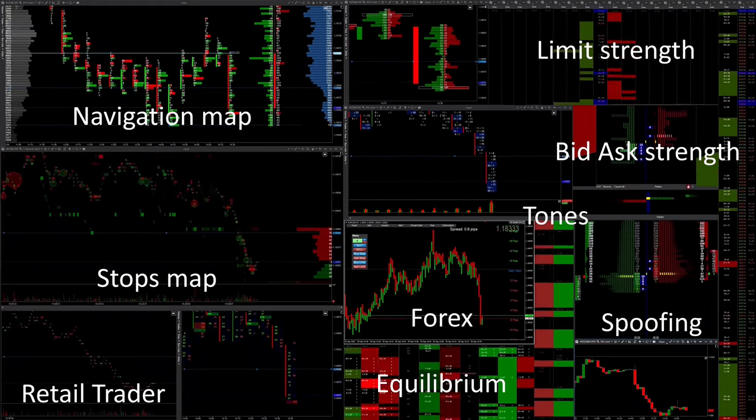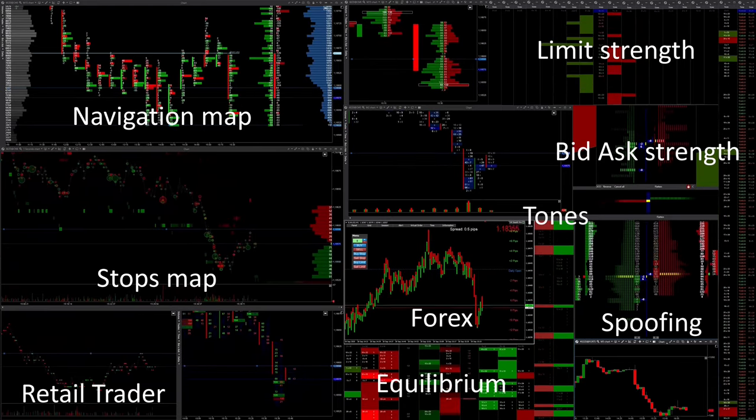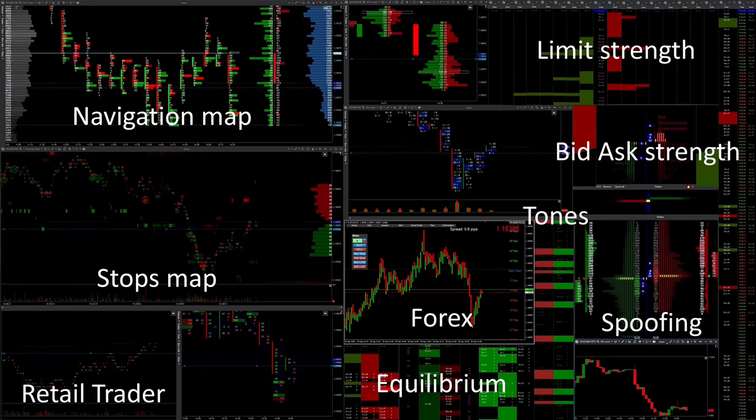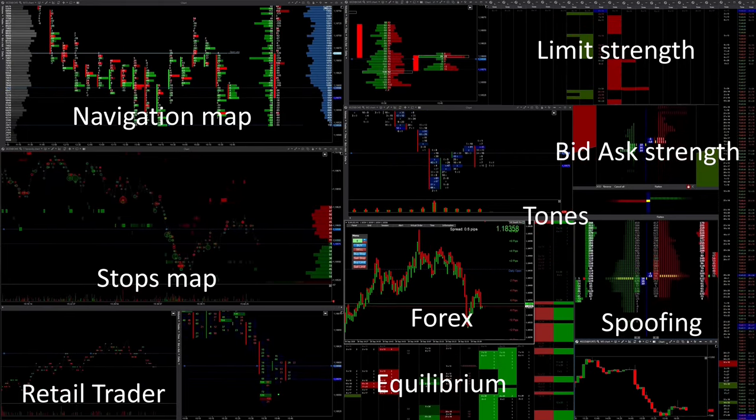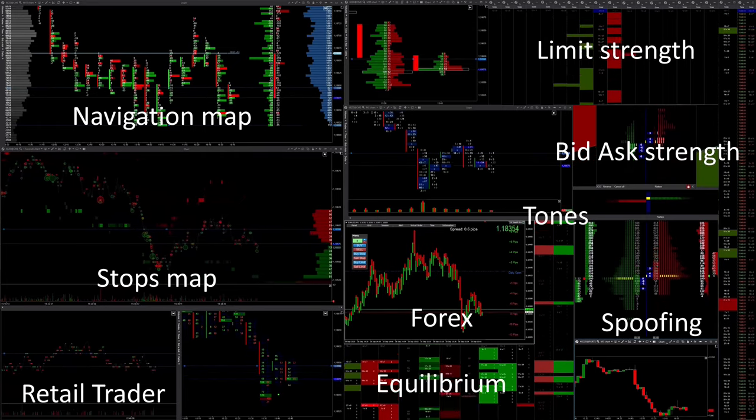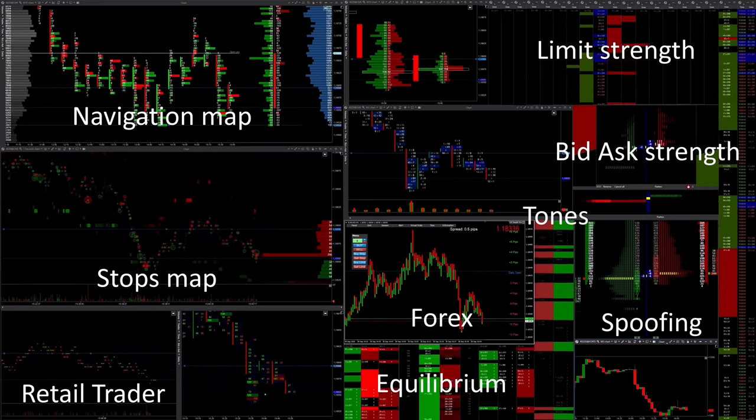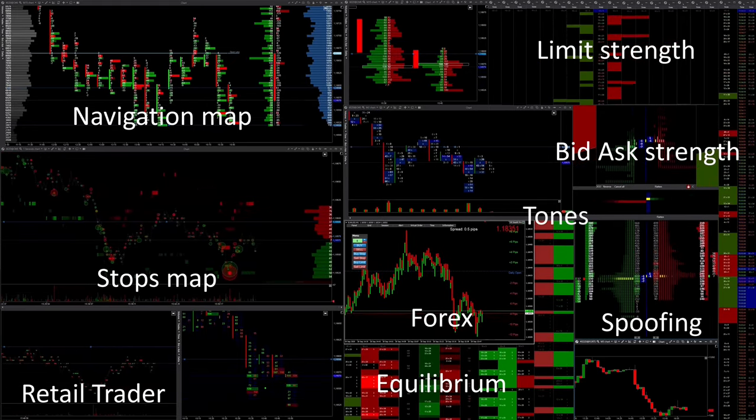In addition, my tones give me information that is not yet shown on the screen. In the middle you can see my trading screen in the forex market. To the right of this, important spoofing information and below that, when an equilibrium is created in the market orders. An equilibrium always means uncertainty and is a possible indication of a trend reversal.